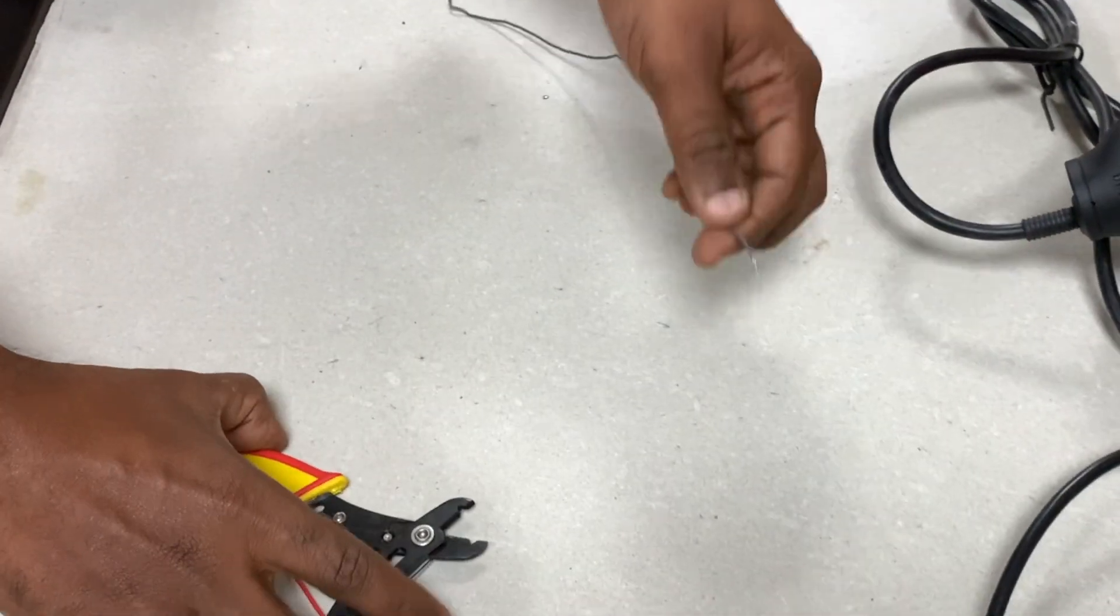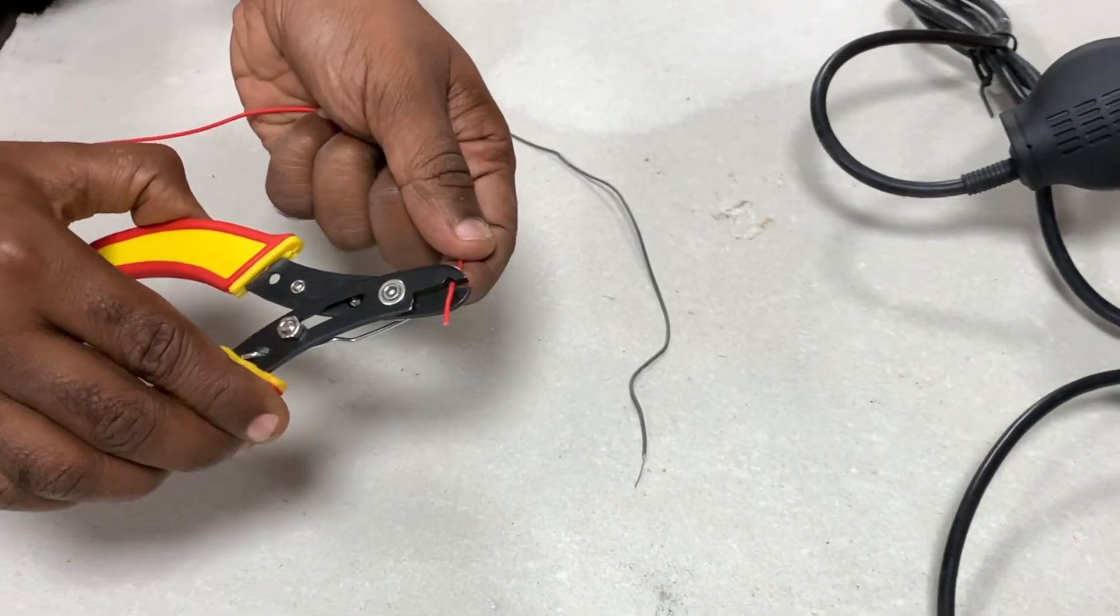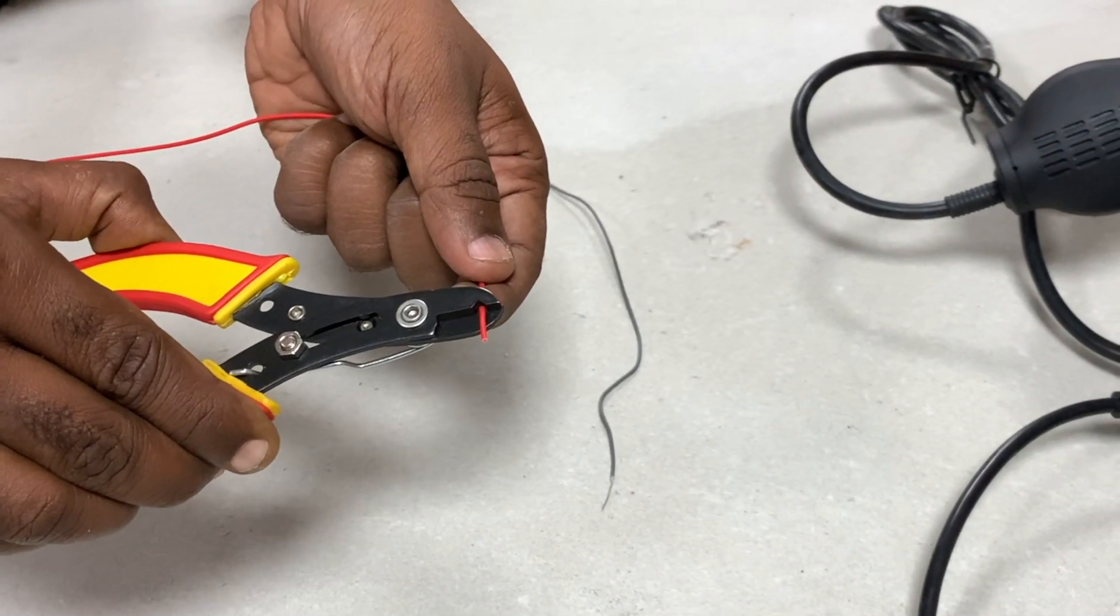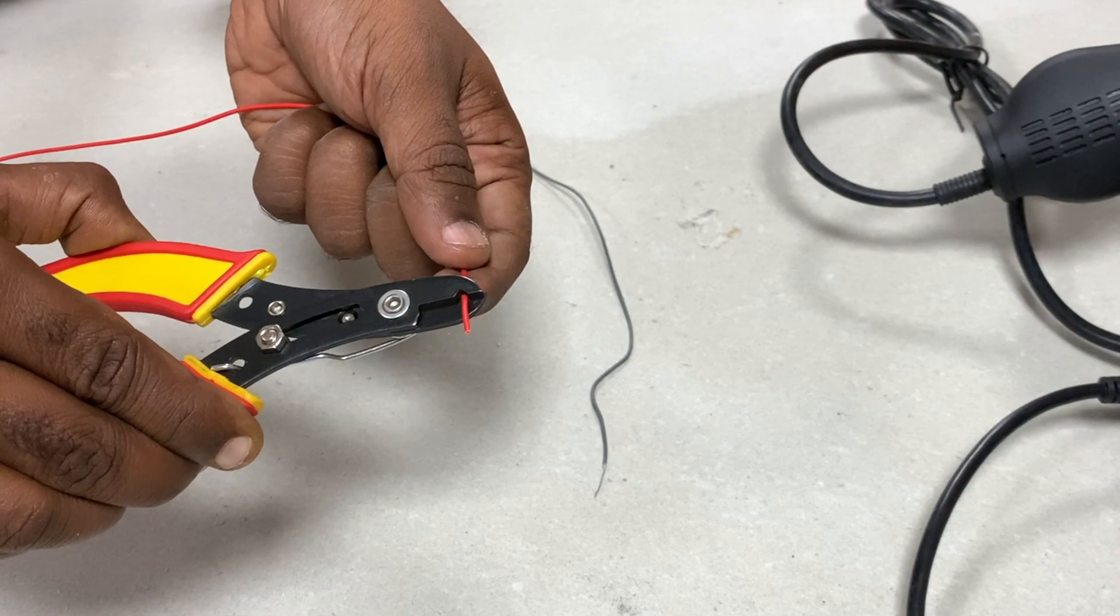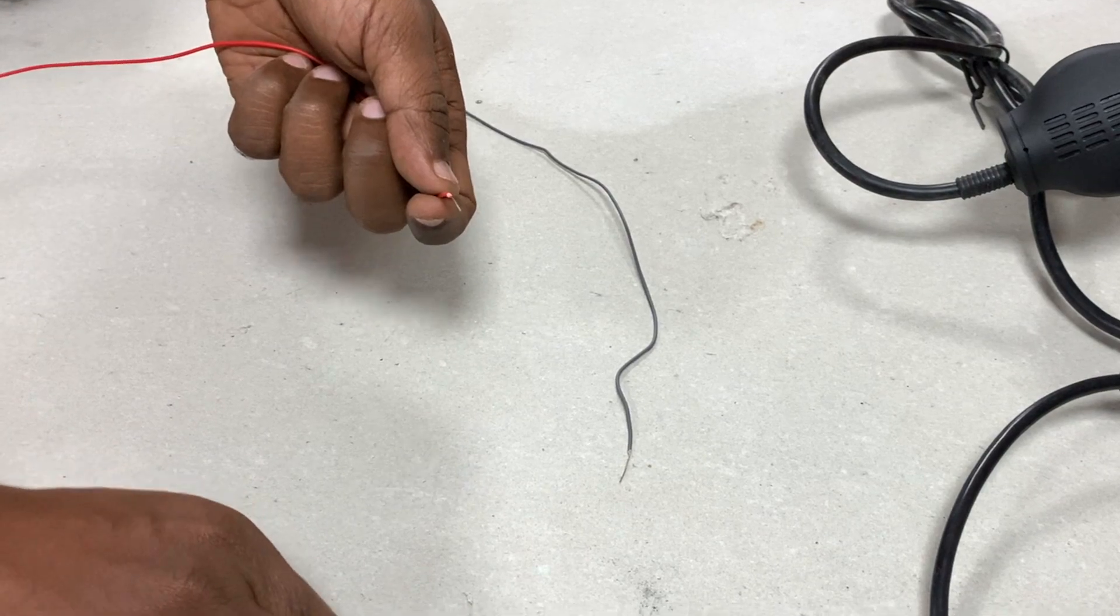So I'm going to connect this to the red wire. This also I'm going to strip. So again, diamond shaped region. Press till you reach the metal, pull out the plastic.